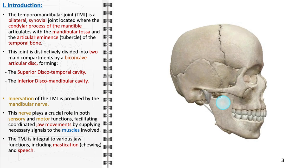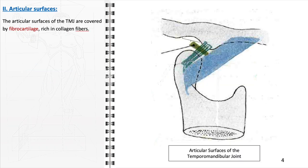Clinical considerations related to the temporomandibular joint hold significant importance in dentistry and maxillofacial practices. Disorders such as temporomandibular disorders can arise from impairments in the joint's function, manifesting symptoms like pain, restricted jaw movement, and audible noises during joint motion. The articular surfaces of the temporomandibular joint are characterized by the presence of fibrocartilage, a resilient tissue rich in collagen fibers, which contributes to the joint's ability to withstand mechanical stress and facilitate smooth movements.